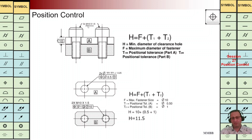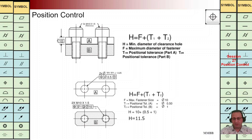In this next example we again have two parts A and B and we are going to use M10. As we can see, for part A we don't know what should be the hole diameter. We have T1 = 0.5 and T2 = 1. Here the projected tolerance zone is considered, so we don't need to consider P in the formula.